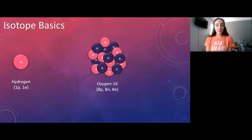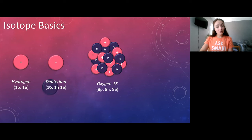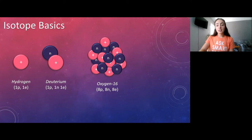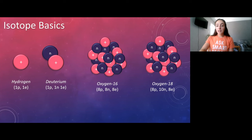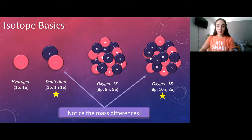Looking at the graphic, we can see hydrogen with one proton and one electron as the most abundant hydrogen isotope, and deuterium with one proton and one neutron. For the stable isotopes of oxygen, oxygen-16 has eight protons and eight neutrons, while oxygen-18 has two extra neutrons — and it's that added mass from the neutrons that is important.